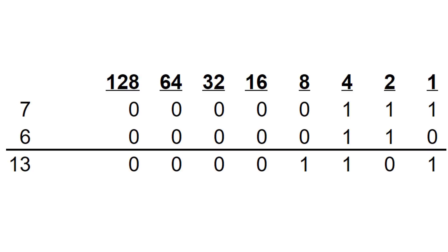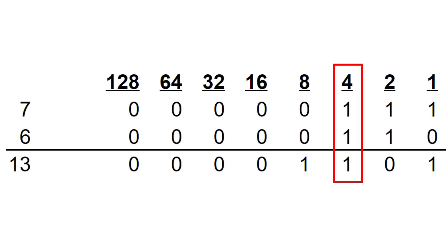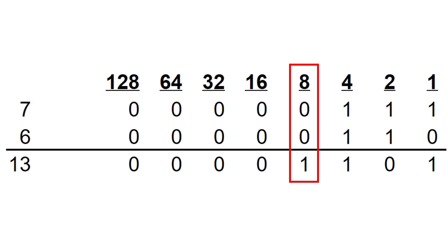Now let's get a bit more complicated — let's add seven and six together. We add the one and the zero, well that gives us one. We add the one and the one — that gives us zero, carry one. So now we've got the one plus the one plus the carry, so that's one, carry one. And then the carried one plus zero plus zero is one, no more carry. So that gives us one, one, zero, one. If you add that up, eight plus four is twelve, plus one is thirteen. So seven plus six is thirteen.